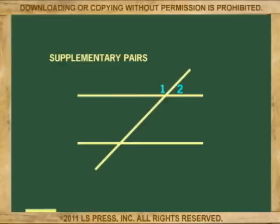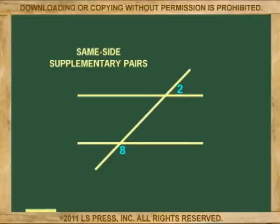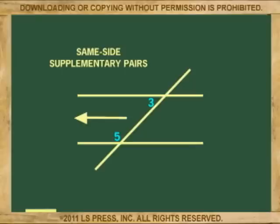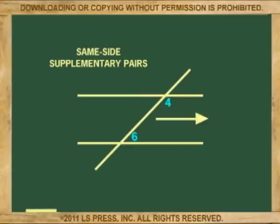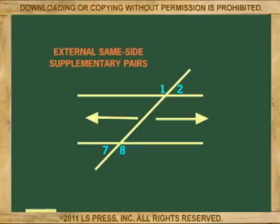In two parallel lines cut by a transversal, there are eight pairs of supplementary angles, such as angles 1 and 2, 2 and 4, 4 and 3, and so on. There are also four pairs of same-side angles which are also supplementary. Same-side pairs are: 1 and 7, 2 and 8, 3 and 5, and 4 and 6.